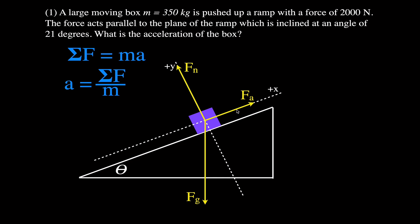The applied force acts nicely along the x-axis and the normal force acts nicely along the y-axis, but the force of gravity is neither along the y nor the x — it's in between. Therefore we need to break it into its component forces to figure out what component of the force of gravity is acting down the inclined plane and pulling the box down, since the box's natural tendency is to slide down. The y component is mgy and the x component is mgx.